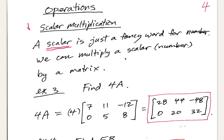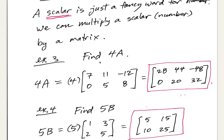We can multiply a scalar by a matrix. For example, 4 times matrix A — so 4 times [7, 11, -12 / 0, 5, 8] — is very simple. That scalar multiplies onto every entry in the matrix, giving us [28, 44, -48 / 0, 20, 32].